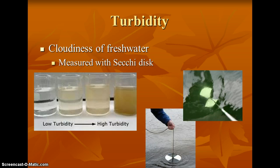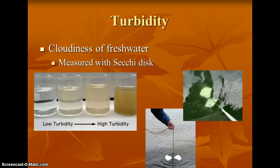Turbidity is the cloudiness of the water. There is a disk that we lower into the water; as soon as you can no longer see the disk, you record the depth. You can also drop it down and raise it back up — as soon as you can see the disk again, you record that depth, find the average of the two, and that tells you how turbid the water is. Lower turbidity means clearer water; high turbidity means more cloudy water.